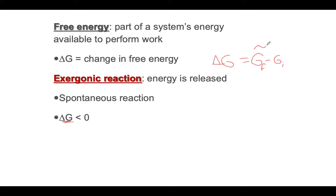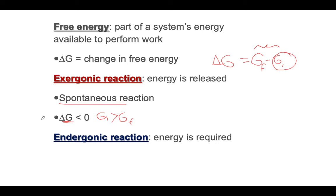In order for this equation to be negative, G initial has to be bigger than G final. So you are going from a larger initial G to a smaller final G. That's why it's spontaneous.